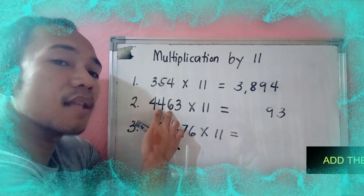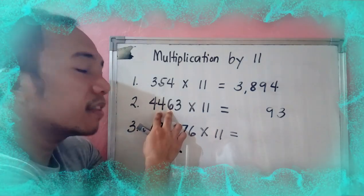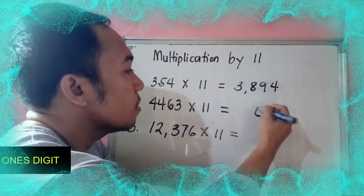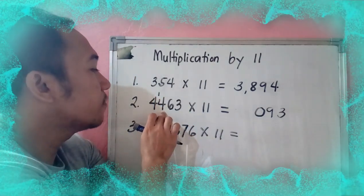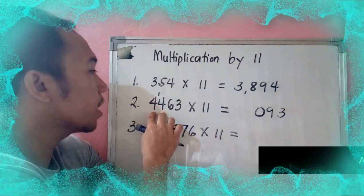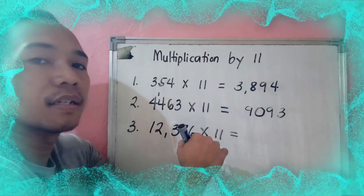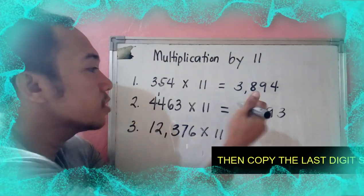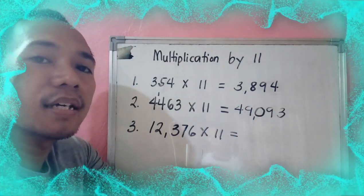Then add 6 to its next number: 6 plus 4 is 10. But if the answer is a 2-digit number, just use the unit digit, which is 0, then carry 1. So add 4 to its next number, which is 4: 4 plus 4 is 8, but you have 1 to carry, so it becomes 9. Then 4 doesn't have a next number, so just copy. You have 49,093.